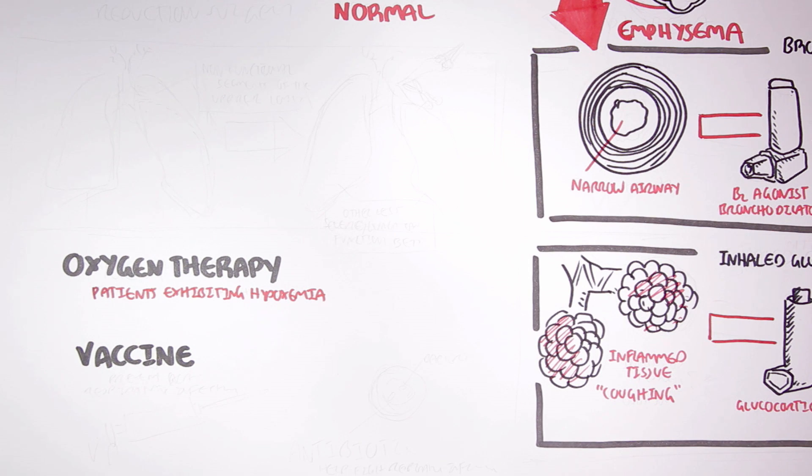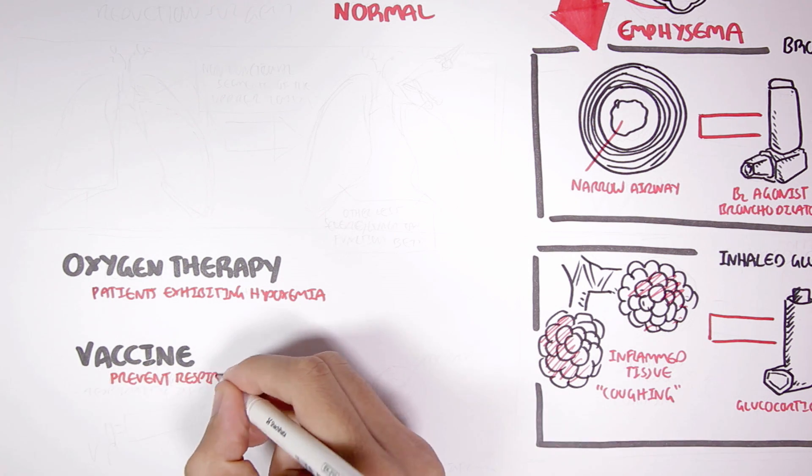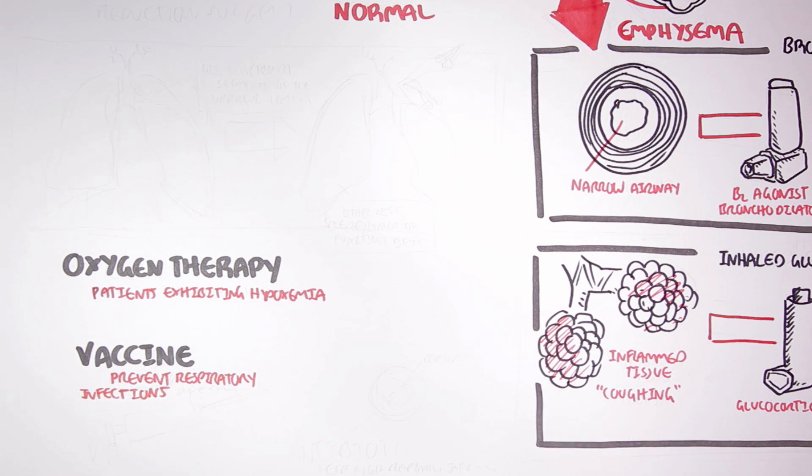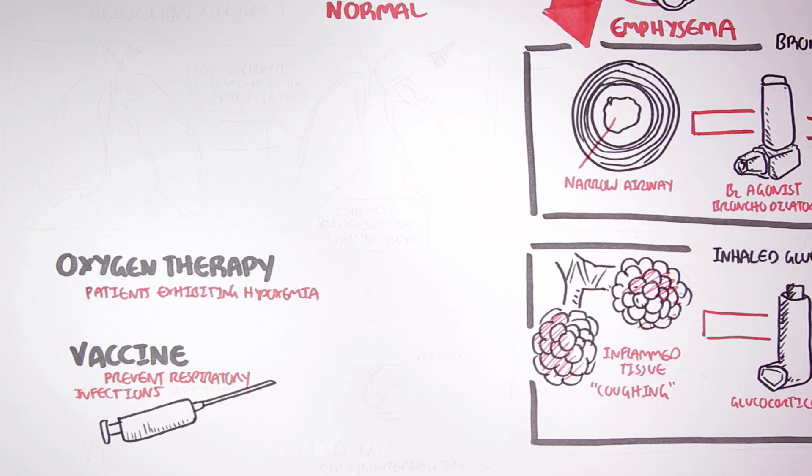Vaccines are advised to prevent respiratory infections. Respiratory infections such as pneumonia can exacerbate the symptoms of emphysema. Also, because emphysema is a result of a chaotic immune response in the lungs, it is necessary that people with emphysema get regular vaccinations.